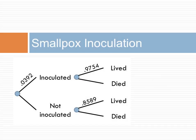The second event is whether the patient lived or died as a consequence of inoculation. For patients who were inoculated, the conditional probability of living is 0.9754. For patients who were not inoculated, the conditional probability of living is 0.8589.